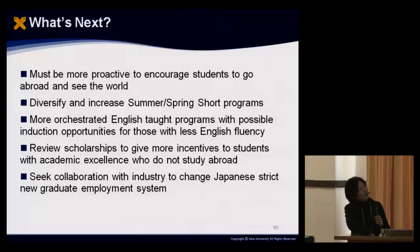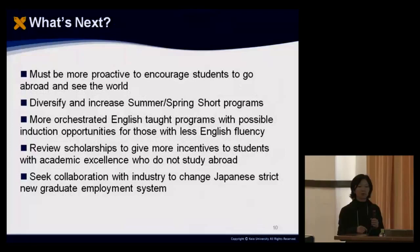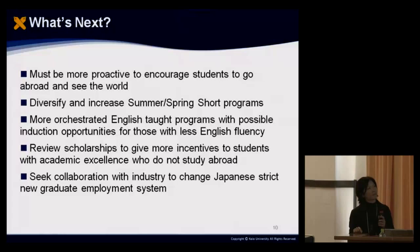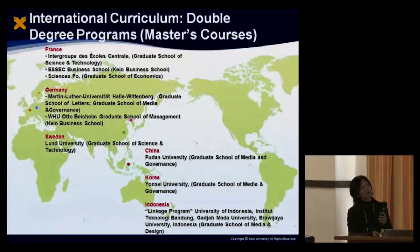As for what's next: as an administrator of an international office, we must be more proactive in encouraging students to go abroad. We need to diversify and increase short-term programs so students can have more trials. We have over 100 English-taught programs, but they need to be more curricularly orchestrated to be attractive to our Japanese students. We also need to review scholarships to give more incentive to academically excellent students who are not applying for study abroad. And as a long-term project, we need to seek collaboration with industry to change Japan's strict new graduate employment system. Thank you very much.